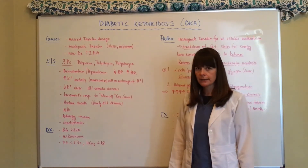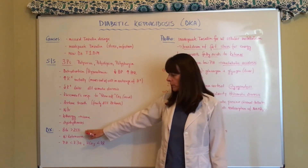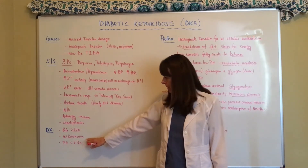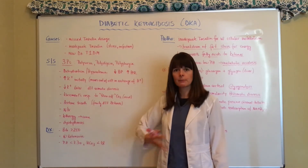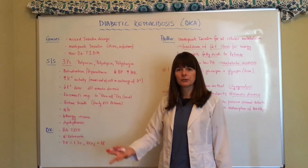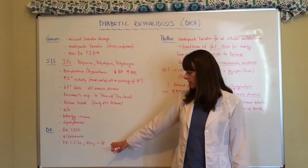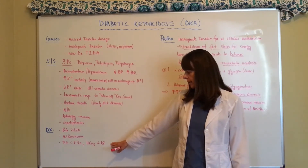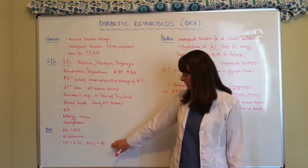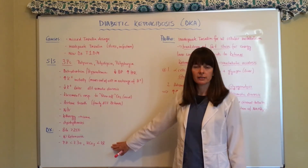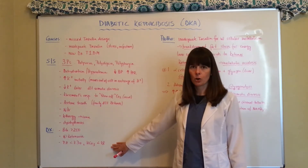DKA is diagnosed by a blood sugar level greater than 250, positive ketones in the urine — which are being spilled over rather than filtered by the kidney — and a pH less than 7.30 with a bicarbonate level of less than 18. These last two in combination confirm that metabolic acidosis is occurring.